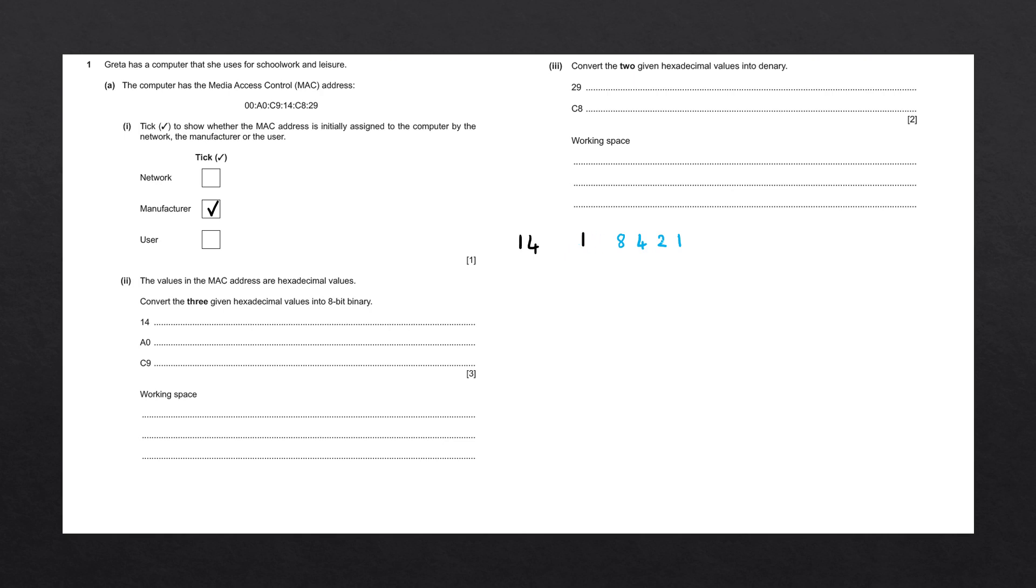Now we work out which numbers we need to make up this number. To make up 1, we only need 1, so we're going to cancel the numbers that we don't need and circle the number that we do need. Wherever we've canceled, we write a 0, and wherever we've circled, we write a 1. That is our first 4 bits.